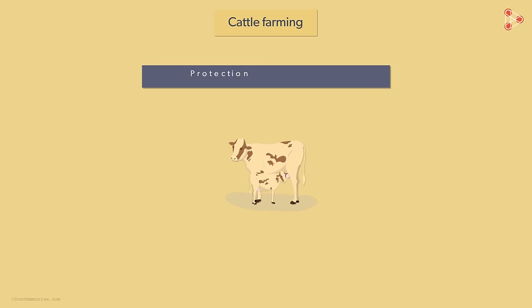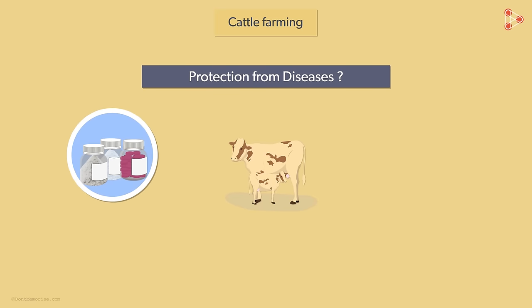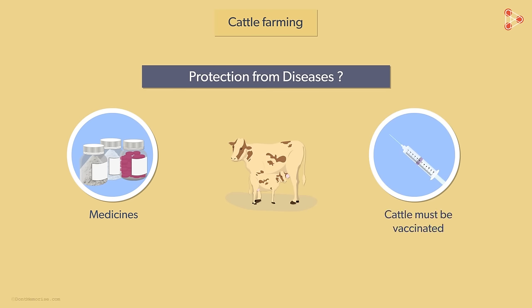To protect cattle from diseases — both visible and internal — cattle must be vaccinated. They must be closely monitored and proper medical facilities must be made available to them. If all these are in place, cattle farming can be a rewarding occupation.